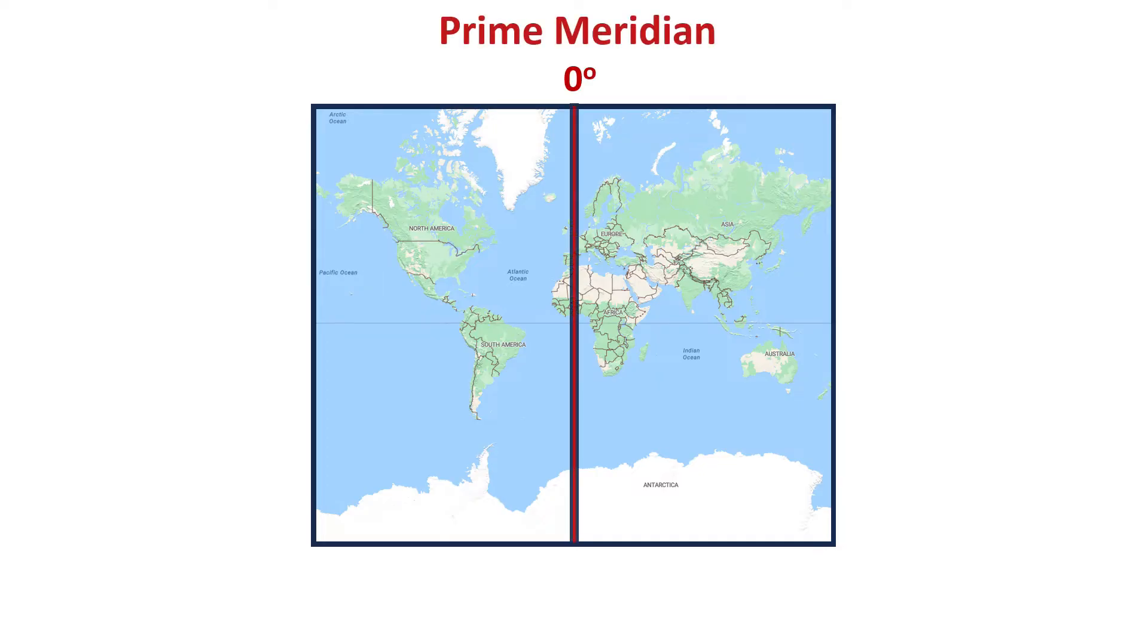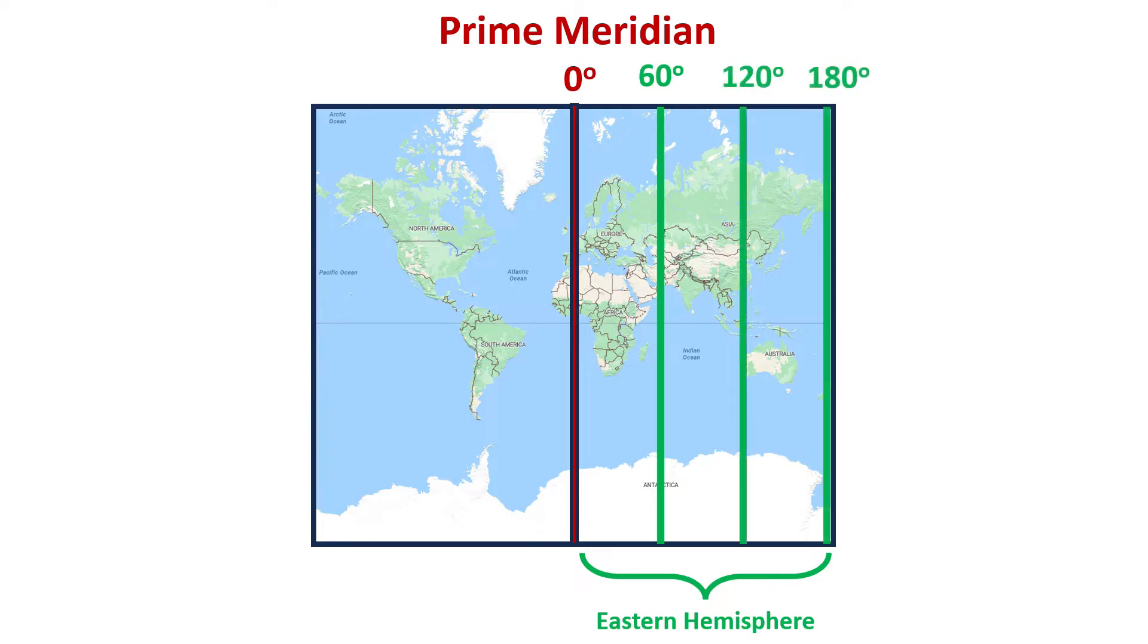Here's how the lines of longitude look on a map. The prime meridian is in the middle. The positive degrees are on the right. When there's no minus sign in front of a number, that means it's positive. The negative degrees are on the left.